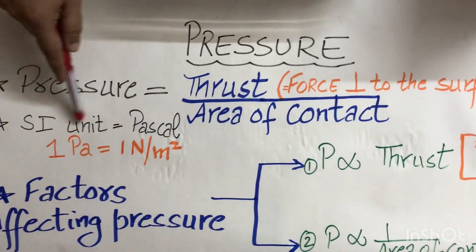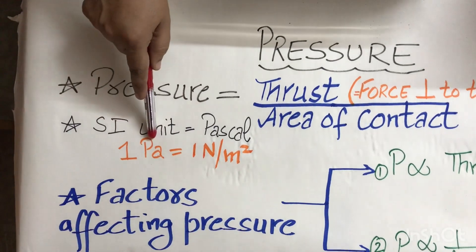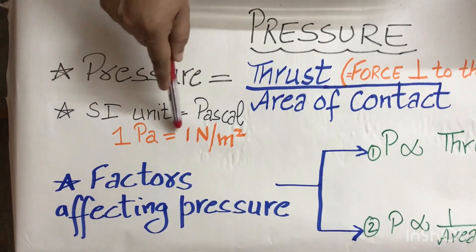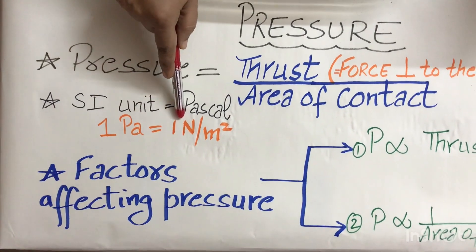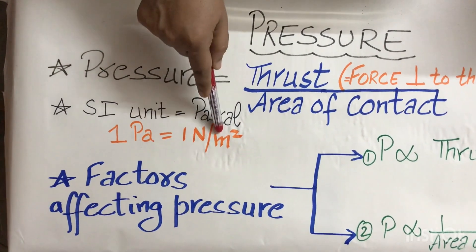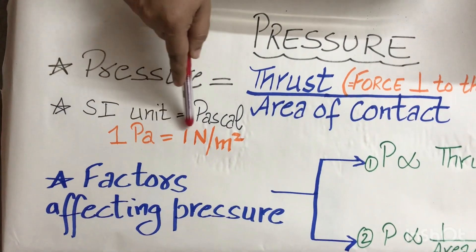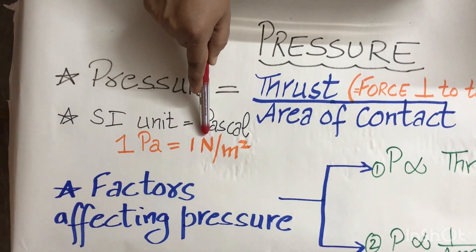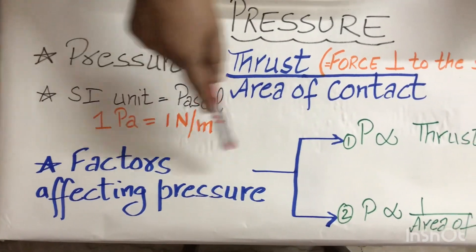The standard unit of pressure is Pascal, which is denoted by capital P small a. It is the pressure applied when one Newton of force is applied on one meter square of area. So one Pascal is one Newton per meter square.